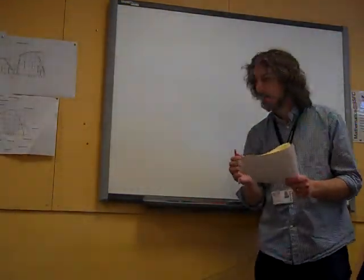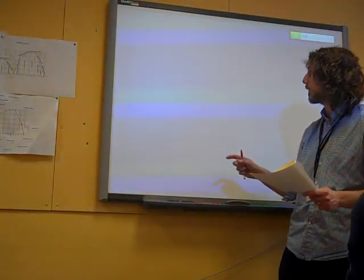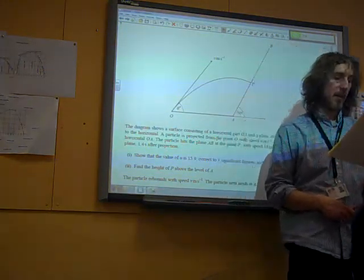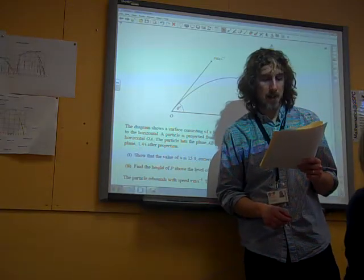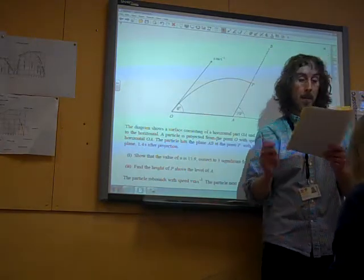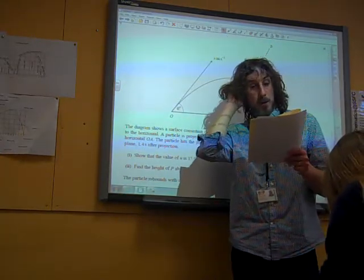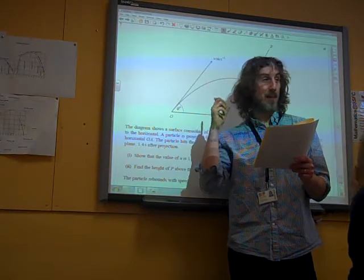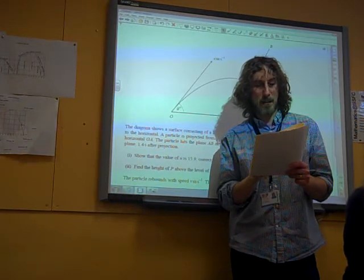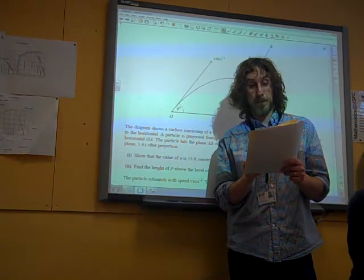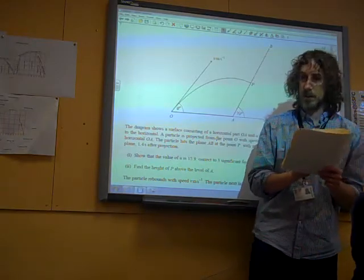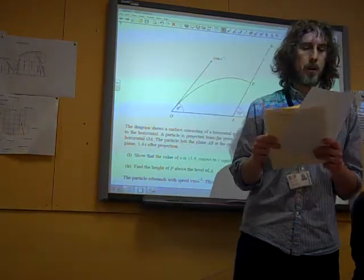Question 7. The diagram shows a surface consisting of a horizontal part at A and a plane AB. The angle is 70 degrees to the horizontal. A particle is projected from O with speed u at an angle theta above the horizontal. It hits the plane at point P with speed 14 and at right angles to the plane, 1.4 seconds after projection.